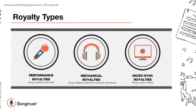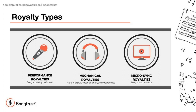When it comes to publishing royalties specifically, there are three main types you should be aware of: performance royalties, mechanical royalties, and micro-sync royalties. Performance royalties are generated anytime your song is publicly performed — so that includes when your song is played on the radio, in restaurants, bars, nightclubs, as well as when your song is sung or played at a live show.